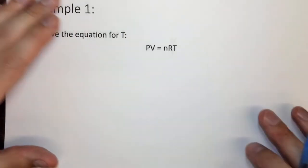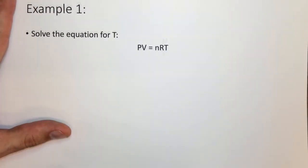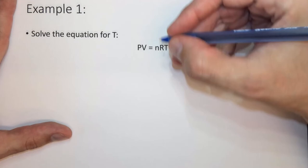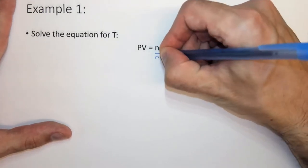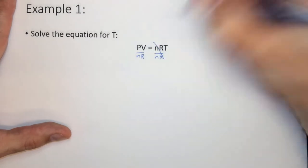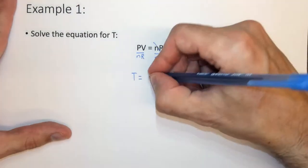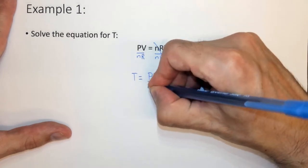So here we have the ideal gas law, PV equals nRT, and it says solve the equation for T. Well if we want to solve for T we need to divide by nR on both sides. nR will cancel out on this side, I'm going to flip it around. T equals PV over nR.